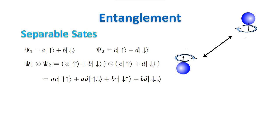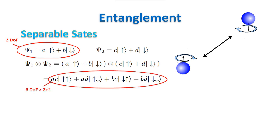It takes four complex numbers to fully define the state of this system, and therefore the composite system has dimension four over the complex numbers. To define the state of one half-spin particle, you need two degrees of freedom, because it takes four real numbers for the two complex components of the state, minus one degree of freedom because we want the state to be normalized to one, and minus one degree of freedom because two states that differ only by a phase define the same state.